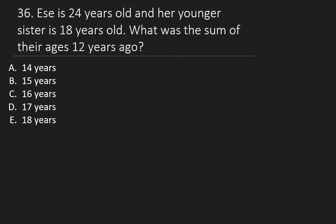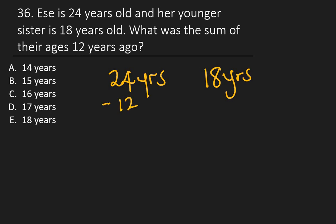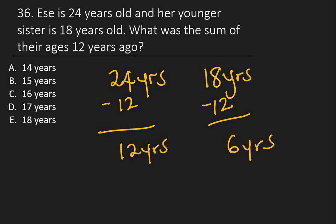Question 36: Essie is 24 years old and her younger sister is 18 years old. What was the sum of their ages 12 years ago? Subtract 12 from each: Essie was 12, sister was 6. Sum = 12 + 6 = 18 years.